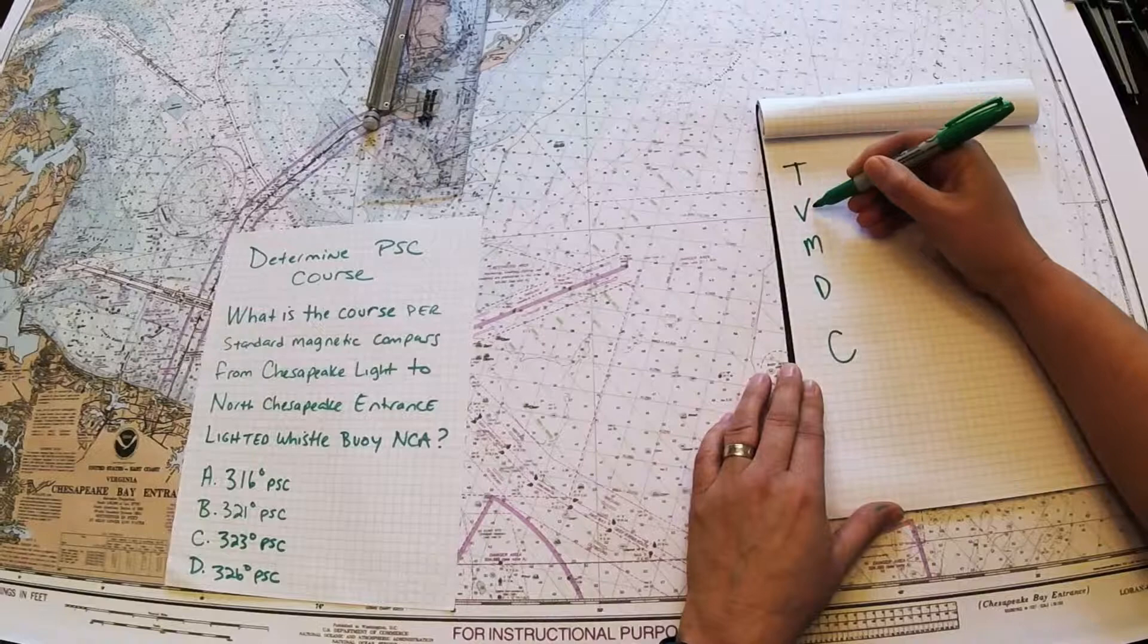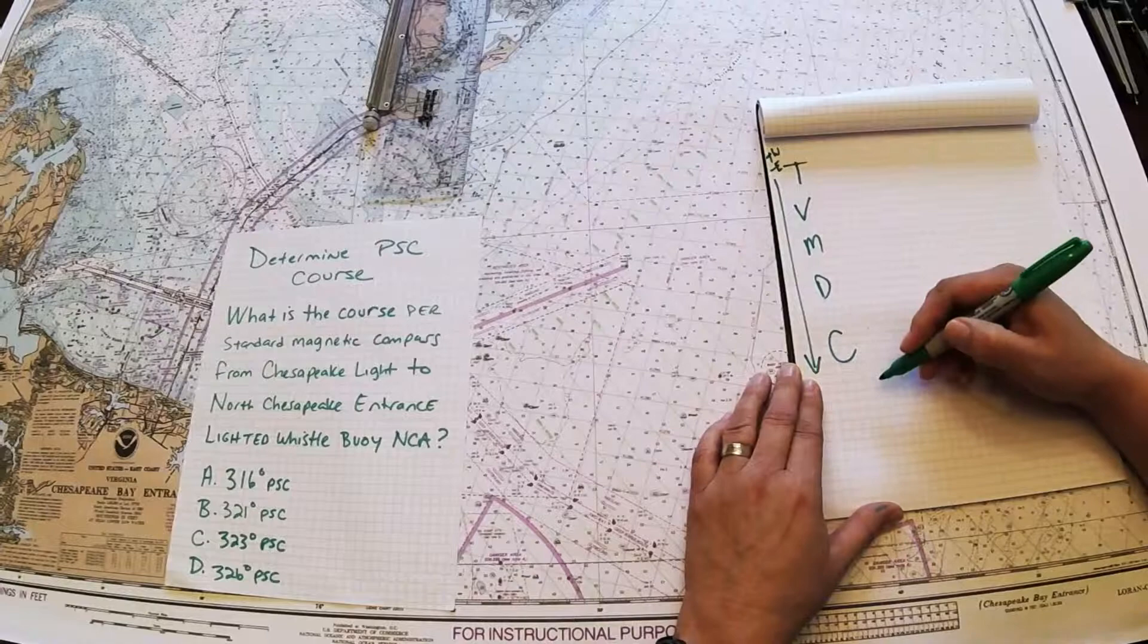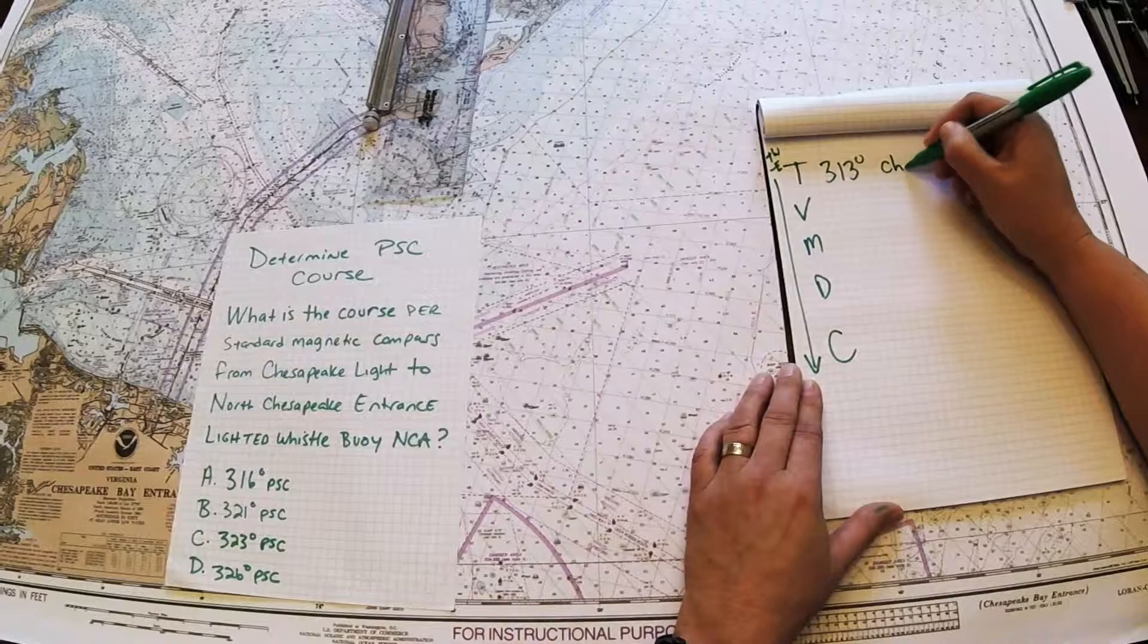Put my arrow in because I'm going from true to compass. Add west, subtract east, error going down. 313 degrees true is what I got off of the chart when they're lined up.